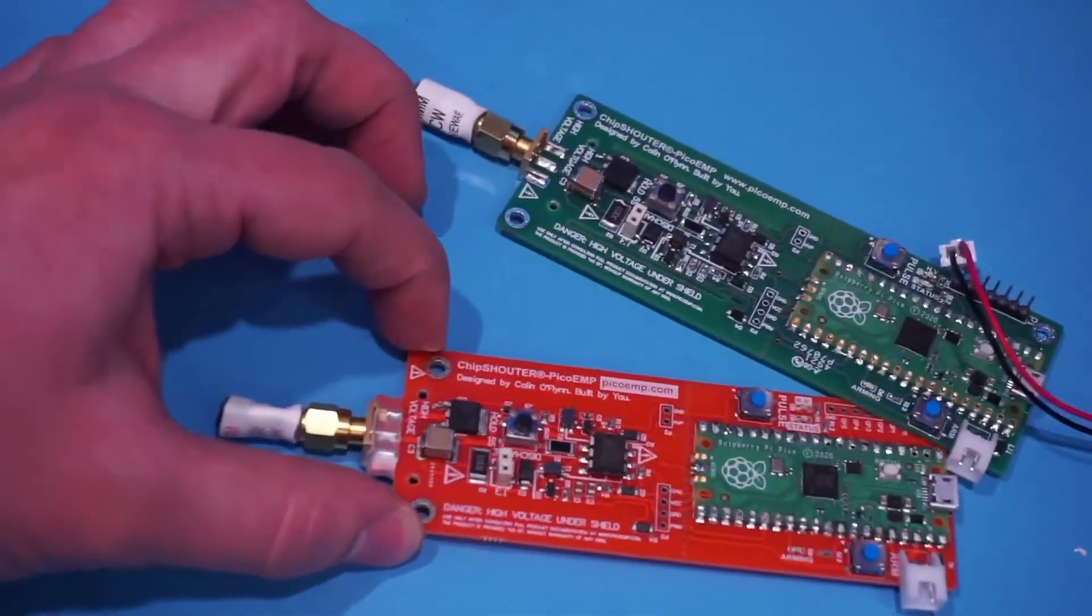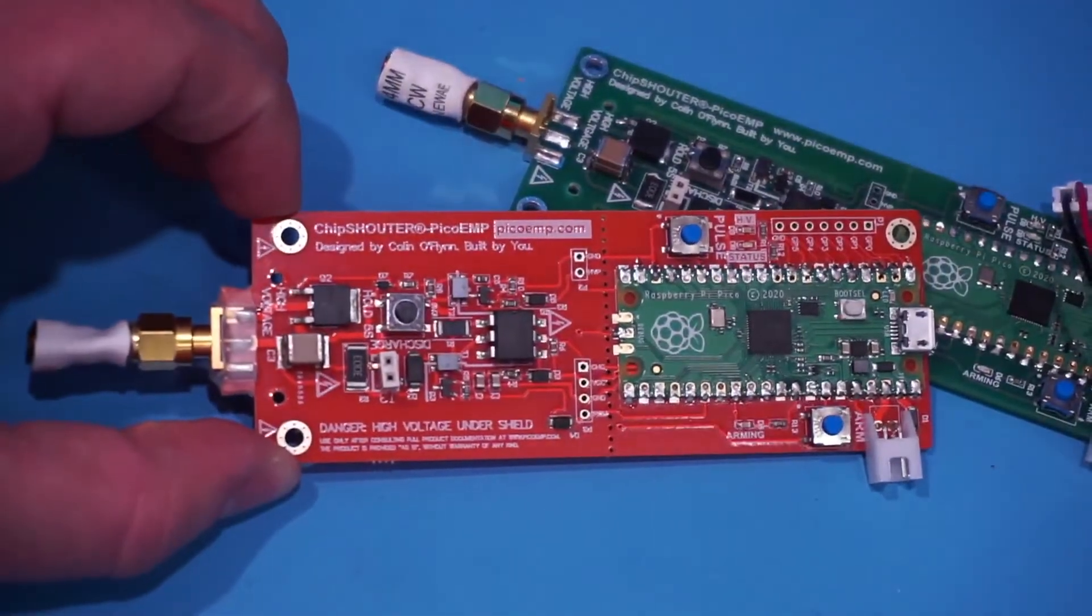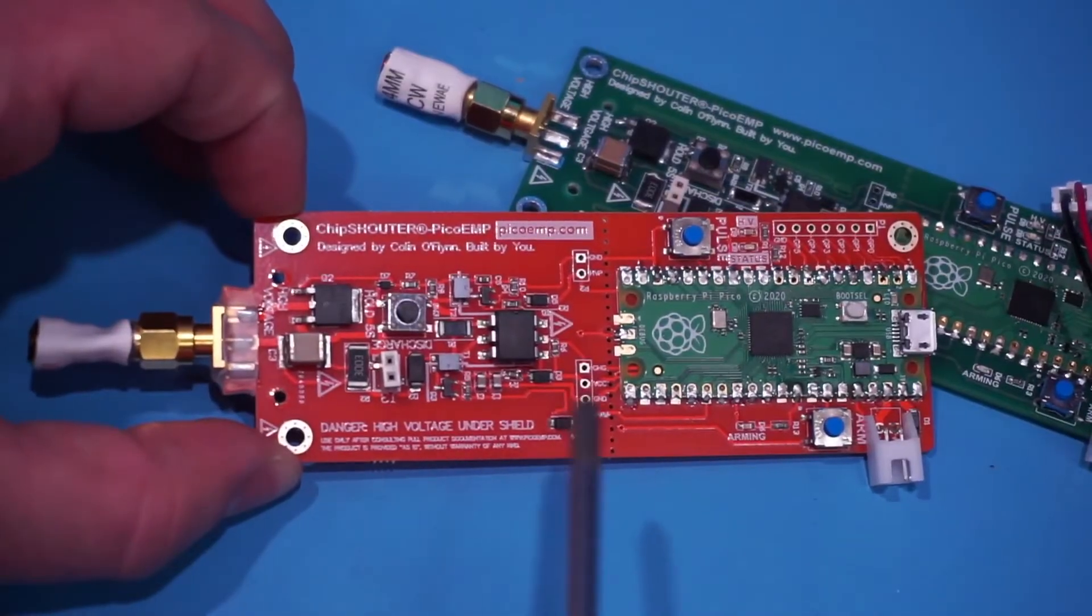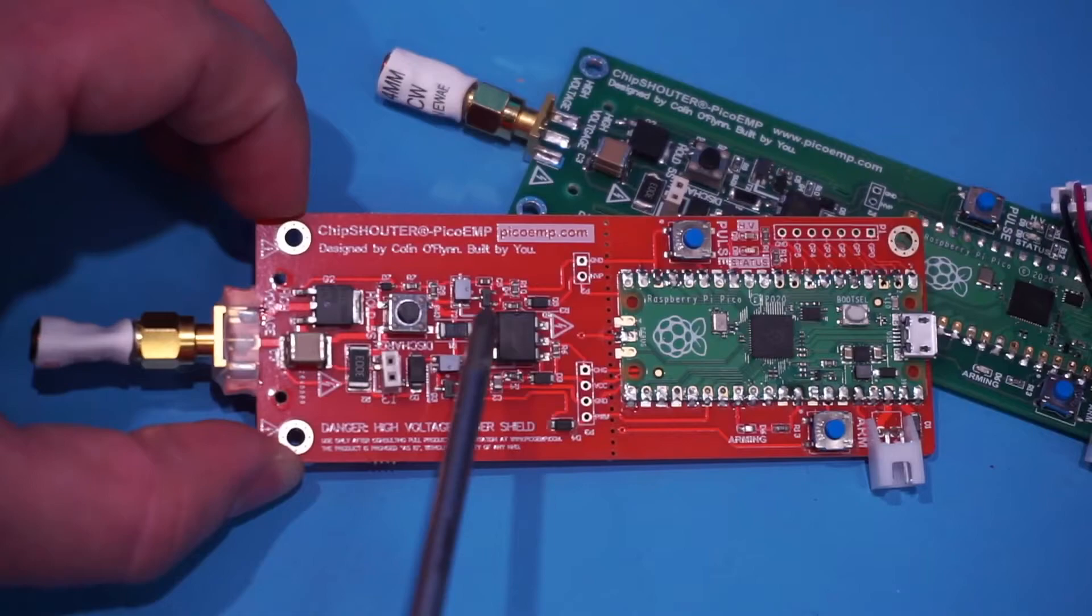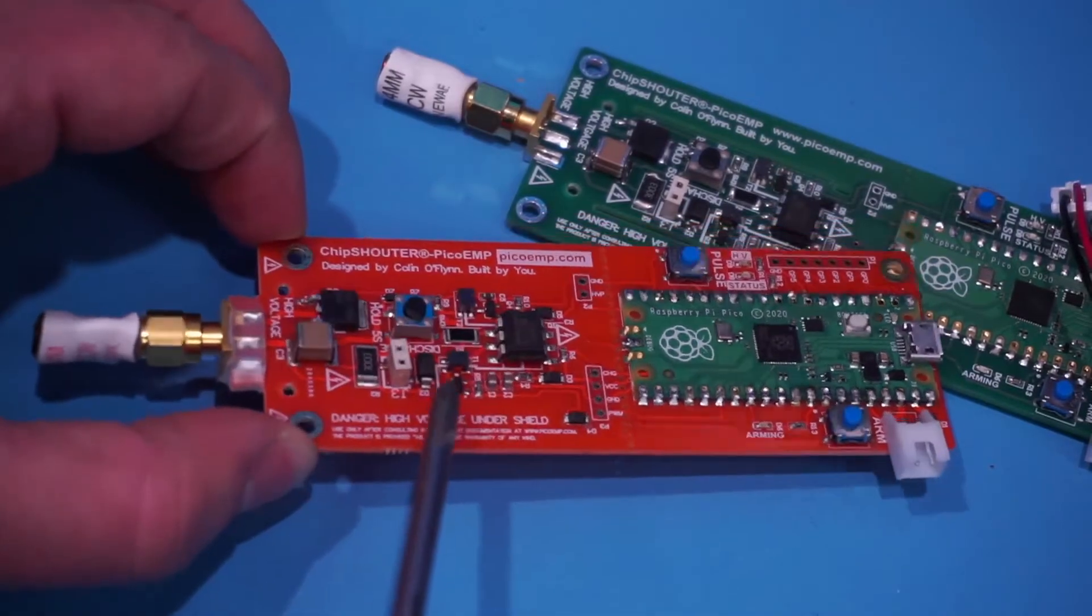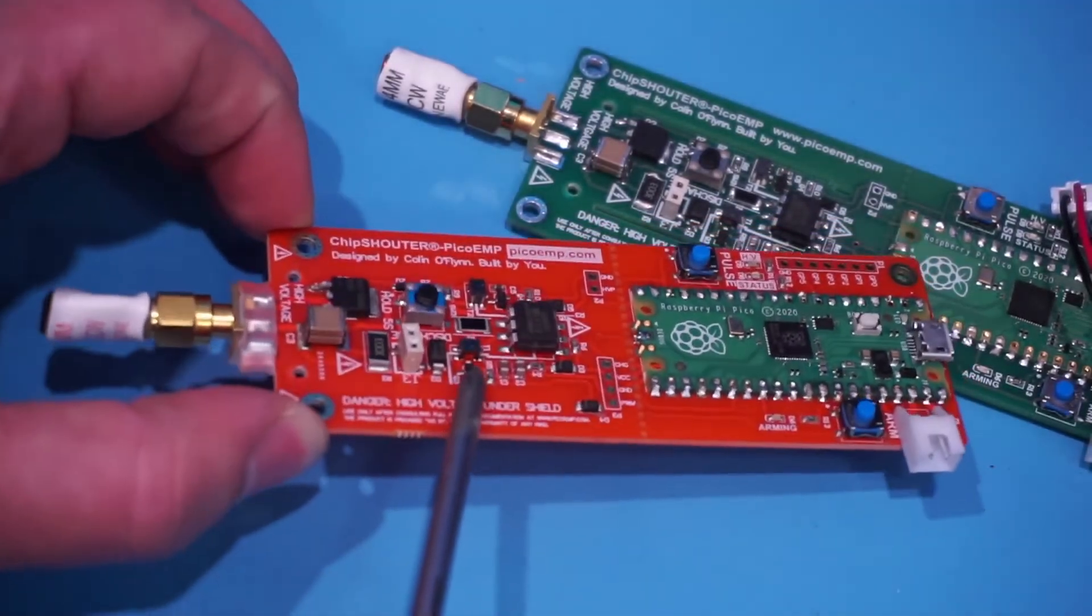So inside of that high voltage area, you basically have some inputs that come in this case from a Raspberry Pi Pico, but you could drive them from an Arduino or anything else. So there's these two transformers here. You can kind of see some windings if you go on the side.